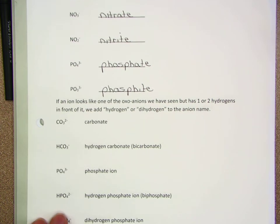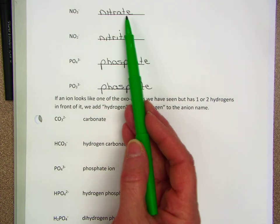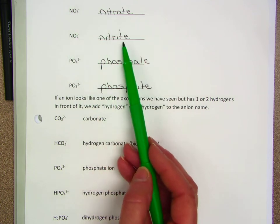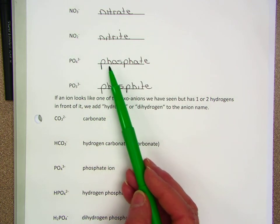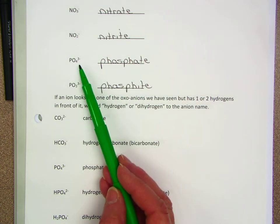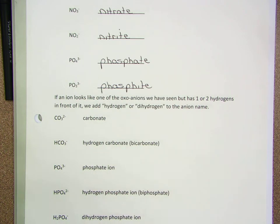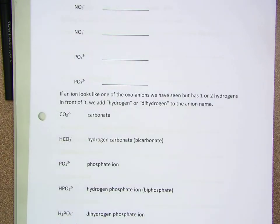Did you get the same things I did? Nitrate, NO3-; nitrite, NO2-; phosphate, PO4(3-); and phosphite, PO3(2-). Does that seem pretty obvious when they're sitting next to each other? Is it easy to remember that phosphate's a 3- charge with 4 oxygens, phosphite is 3 oxygens and a 3-, but sulfate's a 2-? No, it's not easy. It takes a lot of practice.